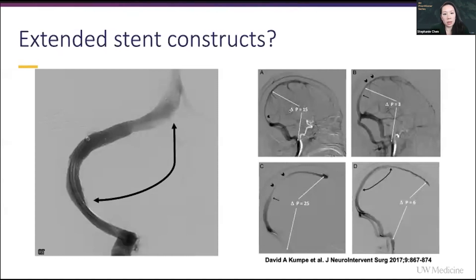This is another case from the literature of a patient who had posterior sigmoid sinus stenosis and had a gradient of 15. They stented up front, and after stenting they checked the gradient again with manometry and noted a gradient of three. But you can see already that there is a little bit of stenosis there.